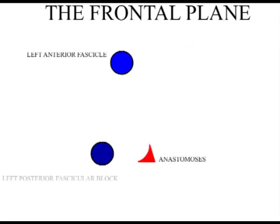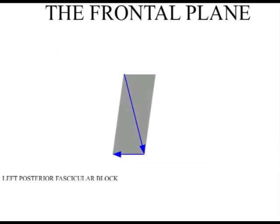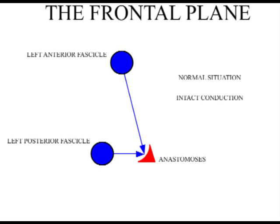With blocked conduction in the posterior fascicle, the inferior surface is depolarized by current flowing from above, and the sum of these two major vectors is now moving downwards and towards the right. This is termed right axis deviation. Many common diseases damage the distal components of the left ventricular conducting system, resulting in left or right axis deviation on the ECG. We will now go on to show you how to identify significant axis deviation, and we will then go on to discuss their causes.